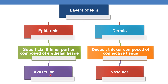Whenever you have a superficial cut — that is, a cut in the epidermis — there will not be any blood, because the epidermis is avascular. But whenever there is a deeper cut reaching the dermis, because it is vascular, you can see blood.